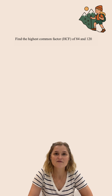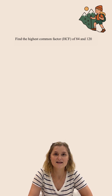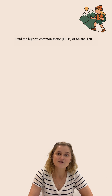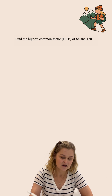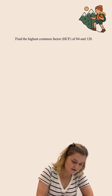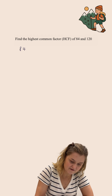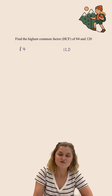Find the highest common factor of 84 and 120. To do this question we're going to use the prime factorisation method. I'm going to start off by doing the prime factorisation of 84 and of 120.